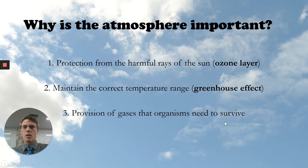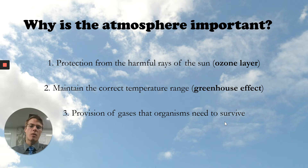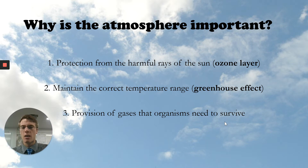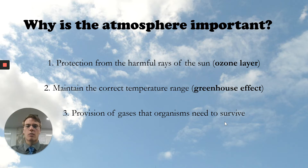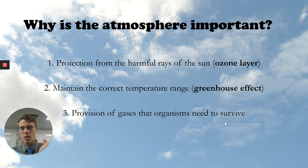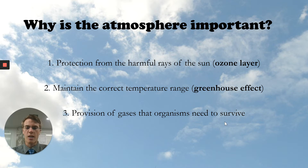In the last video I talked about two reasons why the atmosphere is important, and I'm going to add a third one. We talked about protection from harmful rays of the Sun — the ozone layer protects the Earth from UV rays and prevents them from reaching the Earth's surface. It also helps us maintain the correct temperature range through the greenhouse effect, where sunlight enters the Earth and heat gets trapped by greenhouse gases like carbon dioxide.